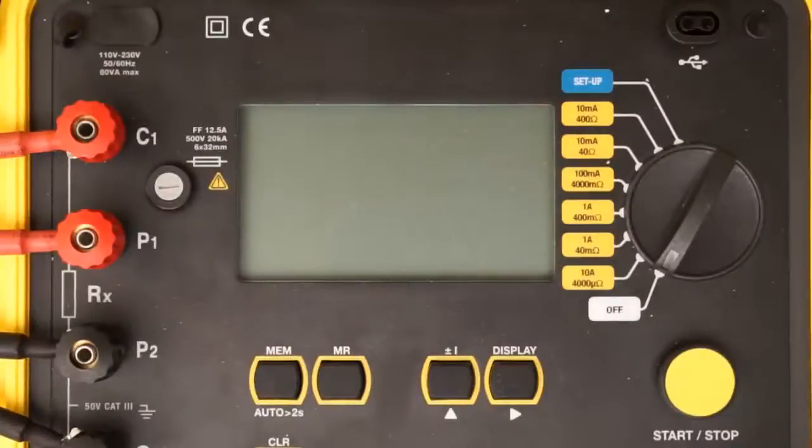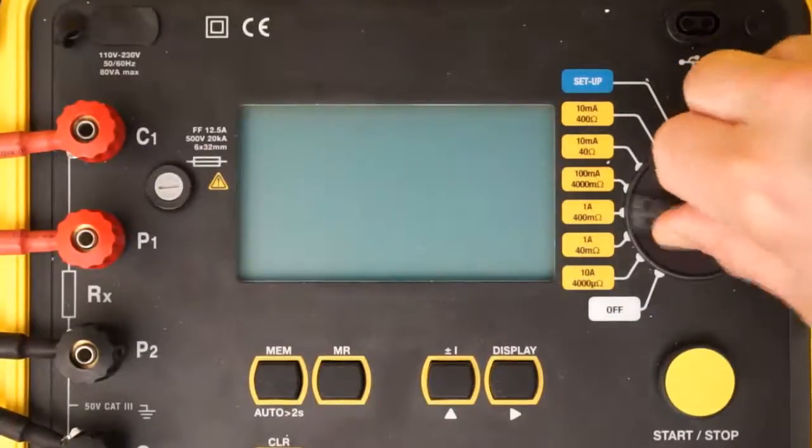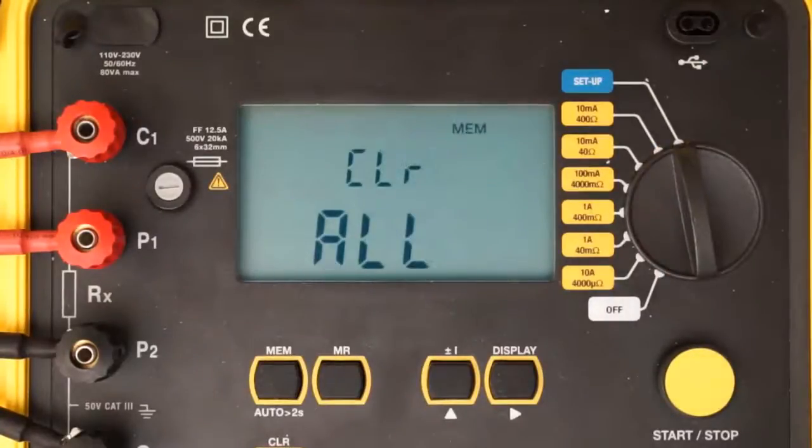We begin our simple demonstration by turning the dial on the Model 6240 to setup. After a few seconds, the first setup screen appears. Setup screens allow you to set several configuration parameters on the instrument. Use the right button to cycle through the setup screens to ensure the settings are appropriately configured for the test you want to run.